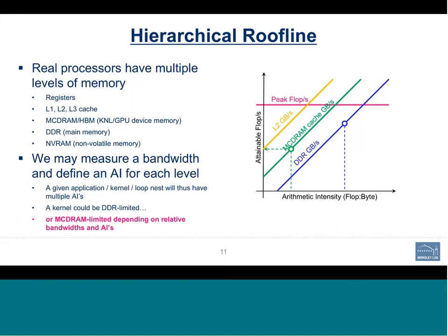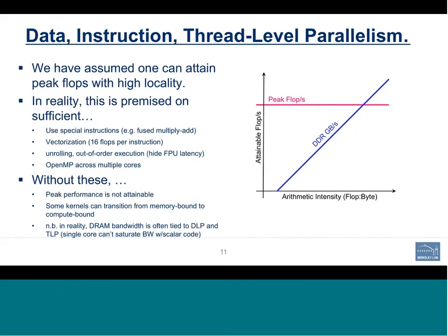Another question: must roofline be run on all cores on a node, or can it be used on one core? You can certainly use it on one core. For example, collecting roofline data for a single thread on a 60-core KNL lets you determine how much lower the per-thread MCDRAM and DDR bandwidth actually are — useful when running hybrid code to understand the penalty for not threading certain loops. DLP stands for data-level parallelism, essentially vectorization or SIMD, and TLP is thread-level parallelism.